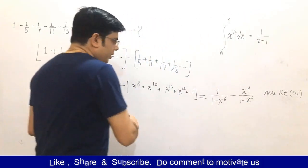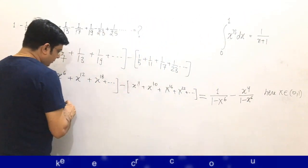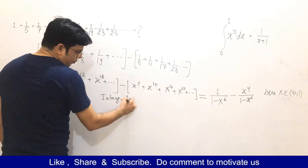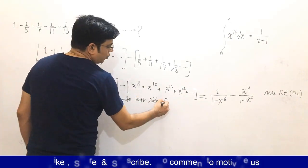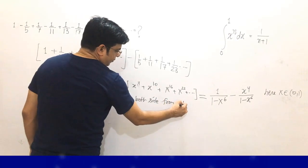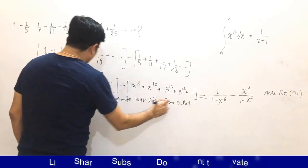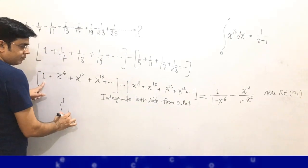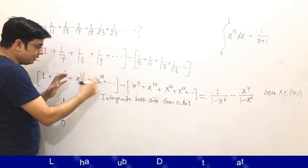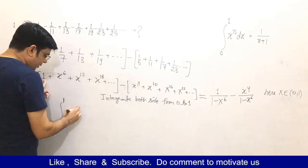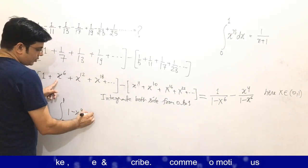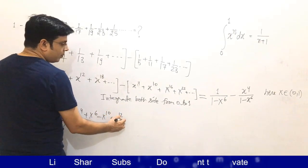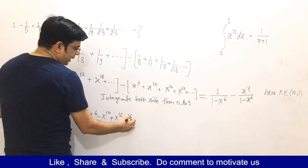Integrating both sides from 0 to 1, we get the integral from 0 to 1 of: 1 − x⁴ + x⁶ − x¹⁰ + x¹² − x¹⁶ + ... dx. The sum of the two rational terms can be written as (1 − x⁴) divided by (1 − x⁶) dx.